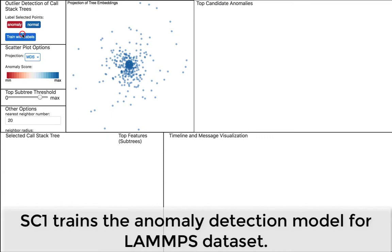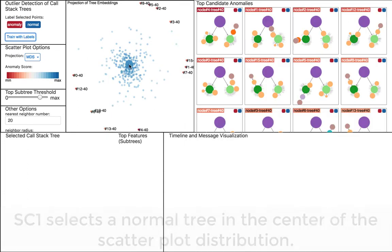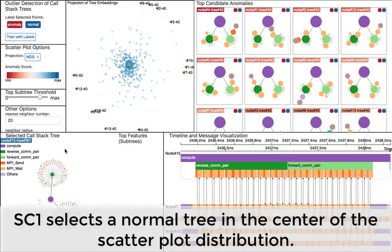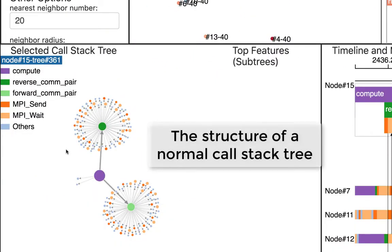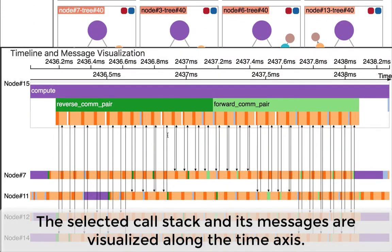The first scientific collaborator, SC1, trains the anomaly detection model on the lab's data. He first selects a blue point in the center of the scatter plot to explore the normal call stack pattern. Its structure and timeline show short and regular function invocations.